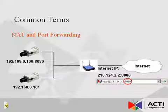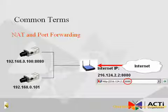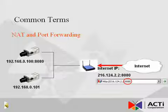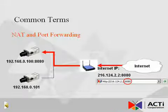When a computer on the internet attempts to gain access to the cameras behind or on the same LAN as the router, special rules must be created to allow that traffic. That process is called NAT, short for Network Address Translation, or Port Forwarding. To perform such routing of network traffic to a specific camera within the LAN, unique ports must be set up. In the diagram as an example, a computer on the internet attempts to access the router's internet IP using port number 8080. Because the router's NAT was set up to route all traffic through port 8080 to a camera, it redirects the connection to the camera's port 8080.